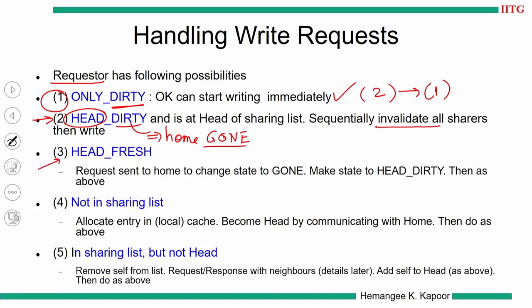Third case: head fresh. We cannot start writing because first we need to invalidate the sharers and become the only node. Second, since we are a fresh node, the directory state is also fresh. So we first have to inform the directory to change from fresh to gone — we go to the home node, change its state to gone. Once done, we get the status of head dirty. From head dirty we know what to do. So from state 3, we go to state 2, then to state 1, and then start writing. Head fresh becomes head dirty, head dirty becomes only dirty, then we can write.